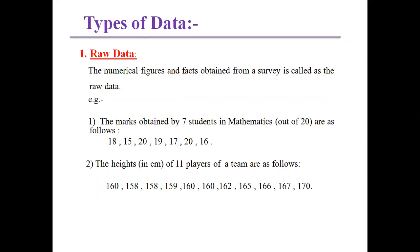As statistics is a collection of data, this data is classified into three types. The first one is raw data. The numerical figures and facts obtained from a survey are called raw data. That means when some information is collected randomly and presented directly without any analysis, such a type of data is called raw data.